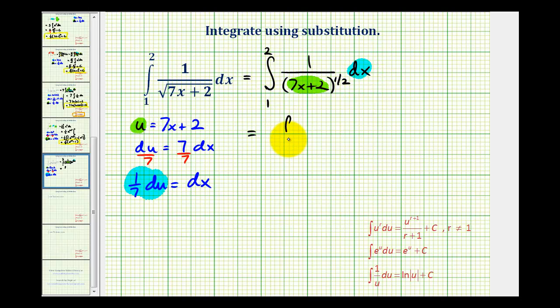So we'll have the integral. This will be one over u to the one-half, which I'm going to write as u to the negative one-half. And then dx is equal to one-seventh du. So we'll have one-seventh here and du here.